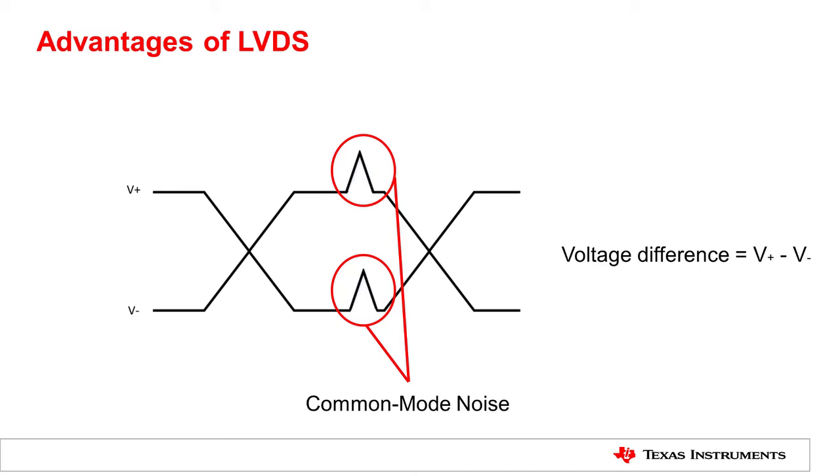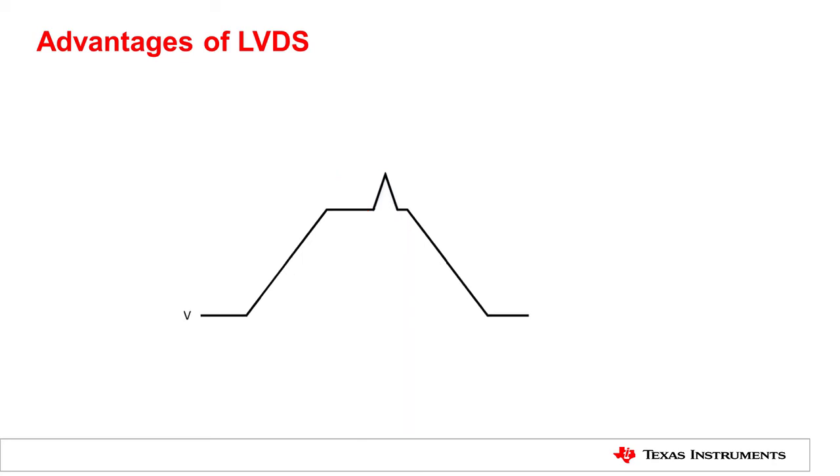This property enables LVDS to have a very high signal-to-noise ratio, and is one of the reasons why LVDS technology is so robust. If the application uses single-ended technology, any external noise will get coupled on the wire, and this noise will affect the signal voltage on the line, which ultimately introduces more data errors.